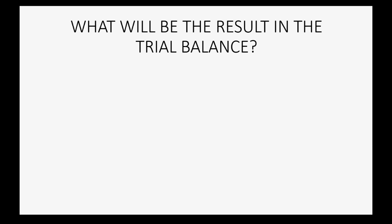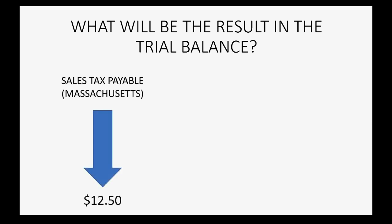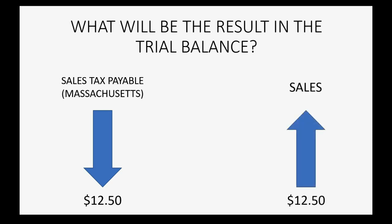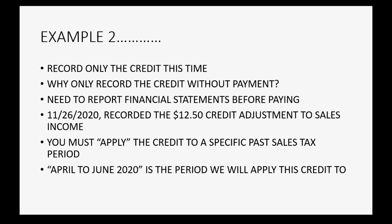What will be the result in the trial balance if we only record the credit without a payment? We might need to report financial statements after receiving the credit but before paying. The sales tax payable will decrease — we owe less by the amount of the credit. And sales income will increase because, in this example, the sales income account is the adjustment account, since we assume it was understated by counting income as sales tax owed. On 11-26, we're recording the $12.50 credit to the April to June tax period.